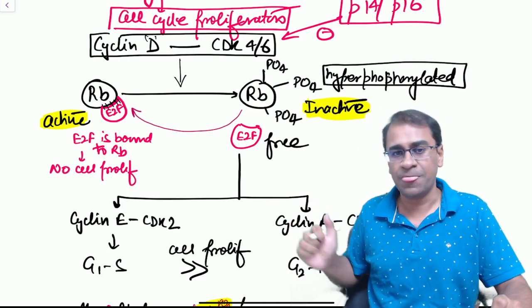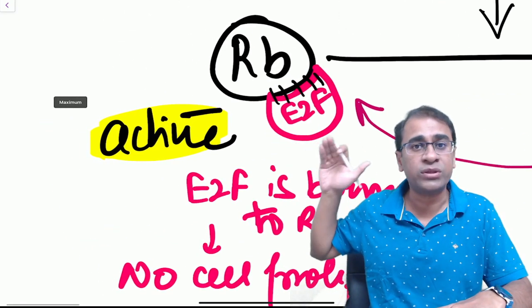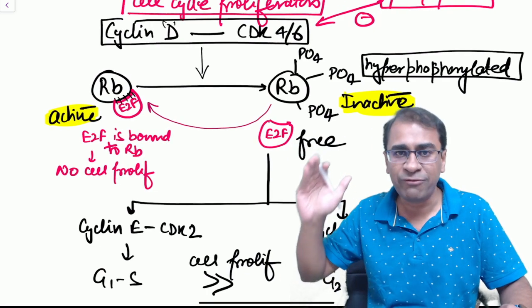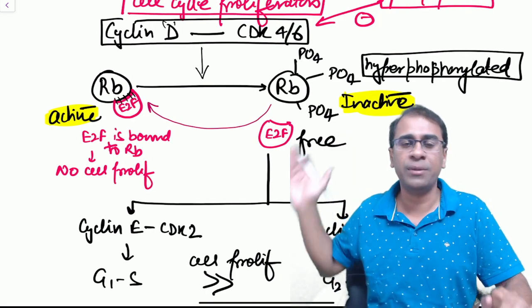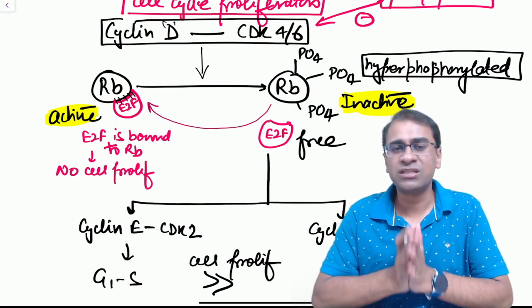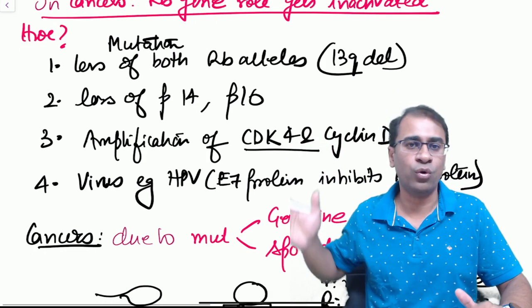The important point to remember is this change from the active form of RB which is hypophosphorylated to the inactive form of RB which is hyperphosphorylated. Remember the hyperphosphorylated form is what is causing proliferation in case of RB protein.